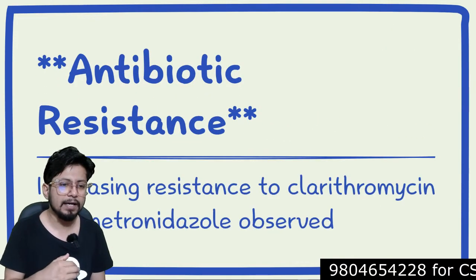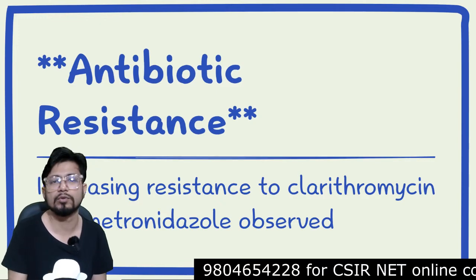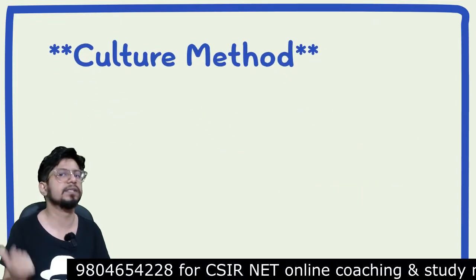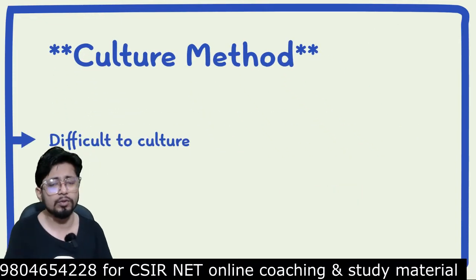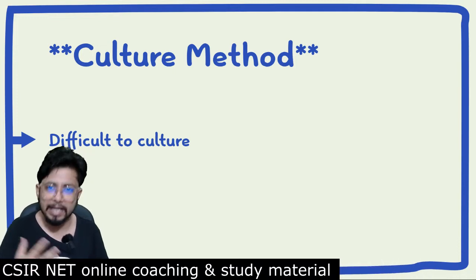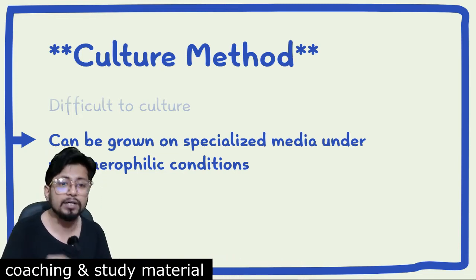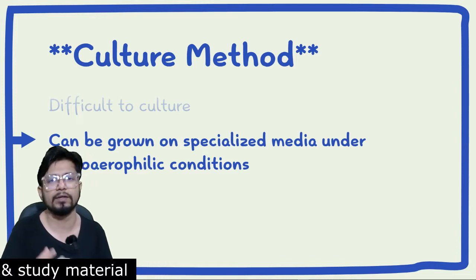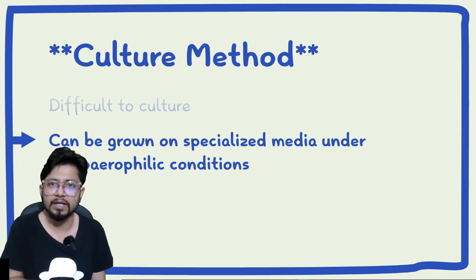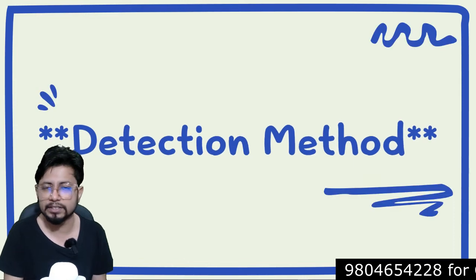Helicobacter pylori has increasing resistance to clarithromycin and metronidazole. Regarding culture methods, it is very difficult to culture because it requires a very acidic environment similar to the stomach. It can be grown on specialized media under microaerophilic conditions, as this bacteria cannot survive in the presence of high oxygen — only a small amount of oxygen needs to be supplied.